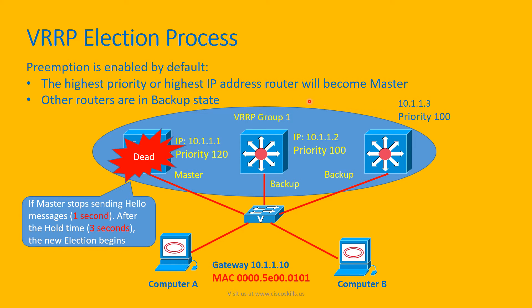In this case, these two layer 3 switches have the same default priority of 100, but this layer 3 switch has the higher IP address, so it will become the new master. A new election process will also begin if a new layer 3 switch joins the group or an existing layer 3 switch leaves the group.